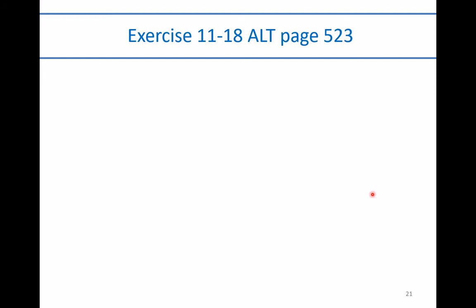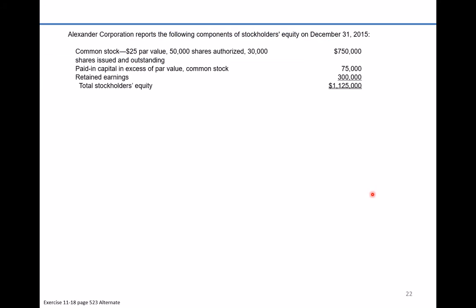In that video I demonstrate how to solve for transactions involving treasury stock, and I use T-accounts to help further explain the increases and decreases to the treasury stock account and also to the additional paid-in capital treasury stock account. I won't use those here, so be sure you go back to look at 11-10 to familiarize yourself with treasury stock transactions. In this exercise we're going to look directly at cash dividends, treasury stock, and statement of retained earnings.